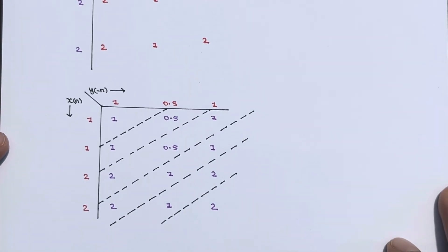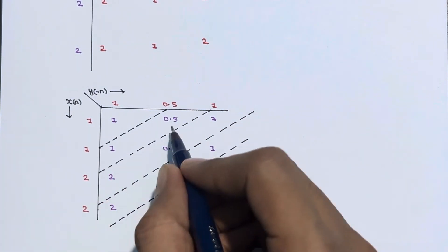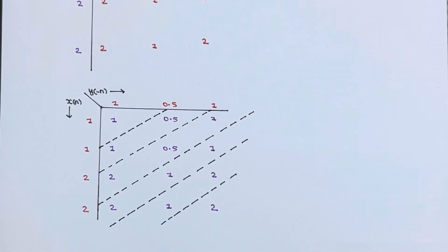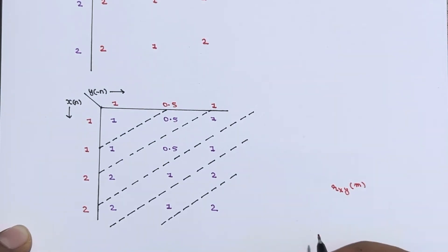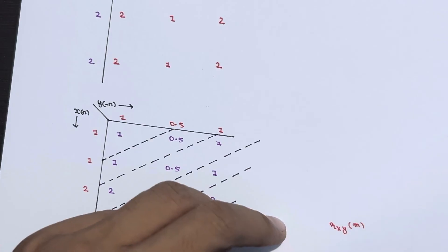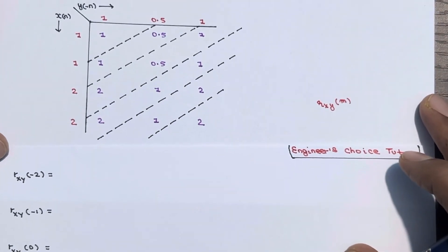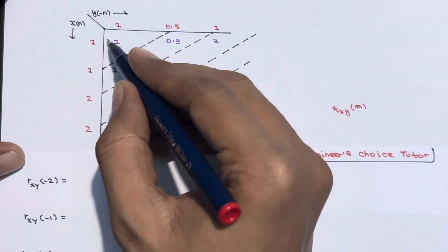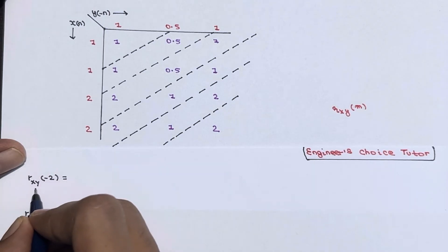Group the elements in the table by drawing diagonal lines. The sum of the diagonal elements gives each sample of the cross-correlation sequence r_xy(m). Since we start from m=-2, r_xy(-2) corresponds to the first diagonal which has only one element: 1. So r_xy(-2) = 1.